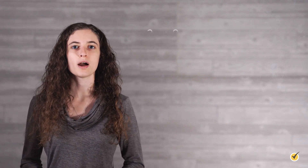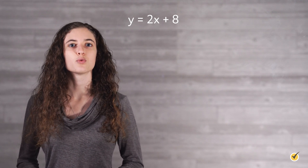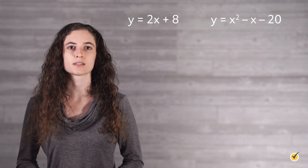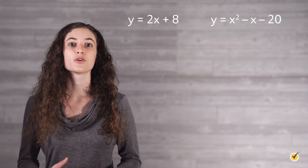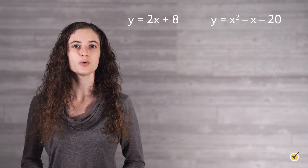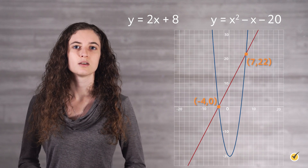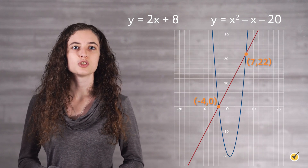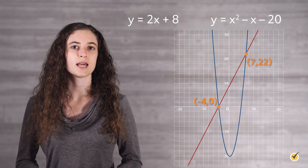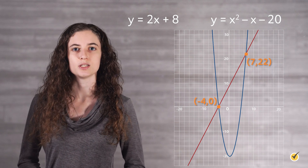The first solving method we are going to look at is solving graphically. To do this, we simply graph our equations, either with a calculator or by hand, and see where the graphs intersect. Let's take a look at the equations y equals 2x plus 8, and y equals x squared minus x minus 20. If we graph these two equations next to each other, we get something that looks like this. We can see from our graph that the two equations intersect at the points negative 4, 0 and 7, 22.